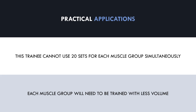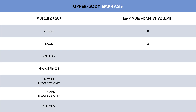For this first example, let's say the trainee particularly wants to emphasize the upper body over the lower body. The trainee may allocate volume as follows: 18 sets for the chest and back, 16 sets for the biceps and triceps, and 10 sets for the quads, hamstrings, and calves. The upper body uses volumes close to their maximum adaptive volume, while the lower body uses lower volumes. This will result in the upper body growing at a faster rate, as the trainee wants to emphasize these muscles. The lower body will still grow, but at a slower rate.